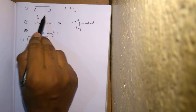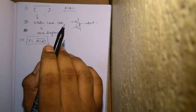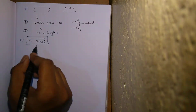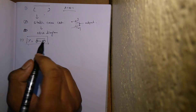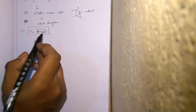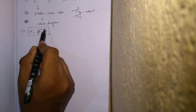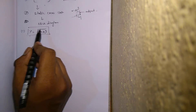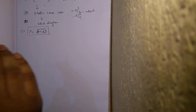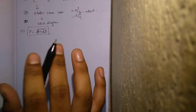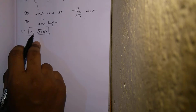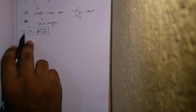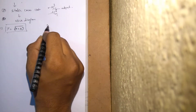The first condition is that the expression should be complemented. Here the expression is already given with a complement, so the first condition is satisfied. For this, we need to draw a static CMOS circuit.